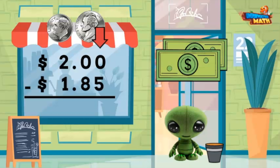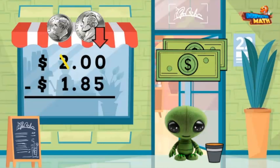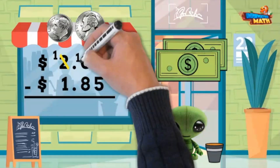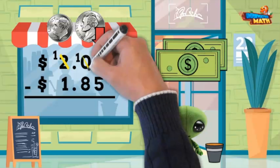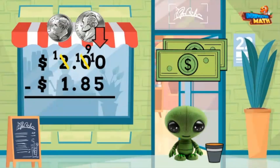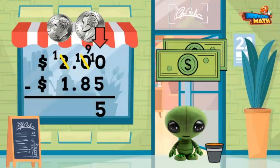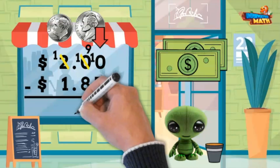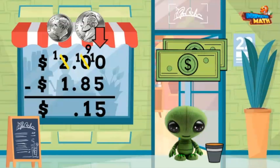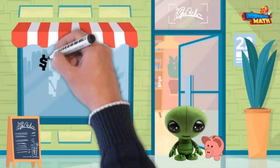Since we can't subtract 5 from 0, we have to borrow from the ones place. Since there's also a 0 in the tenths place, the 2 becomes a 1 and the 0 in the tenths place is now a 10. We borrow from it, and the 0 in the hundredths place is now a 10. 10 minus 5 is 5, and 9 minus 8 is 1. I'll get 15 cents back.